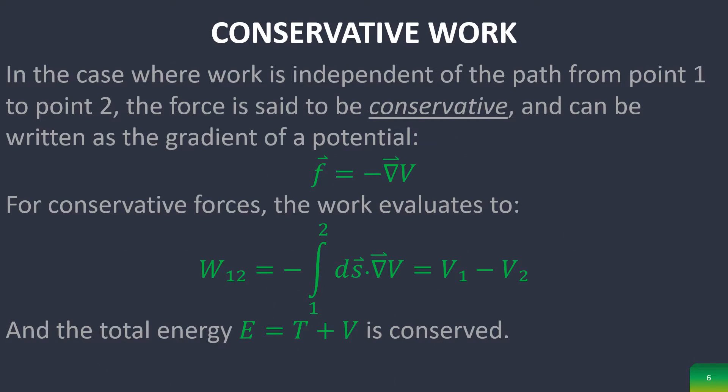In the case where work is independent of the path from point one to two, the force is said to be conservative and is written as the gradient of a potential. For conservative forces, the work evaluates to the following line integral, and thus total energy is equal to T plus V, where V is the potential and T is the kinetic energy.